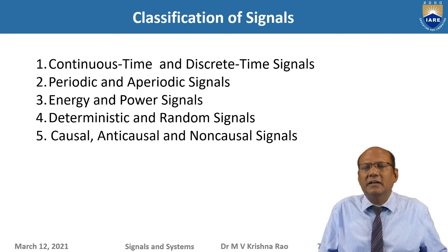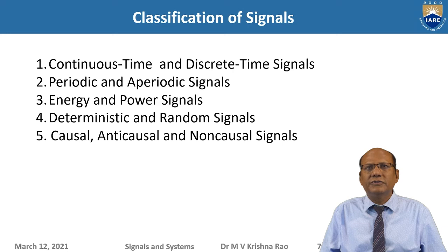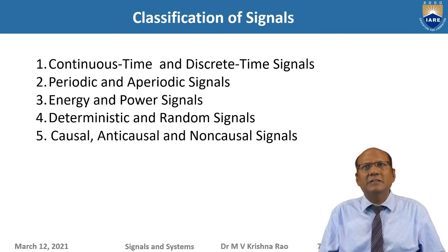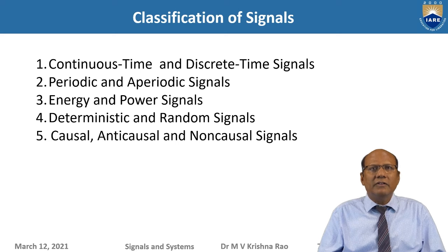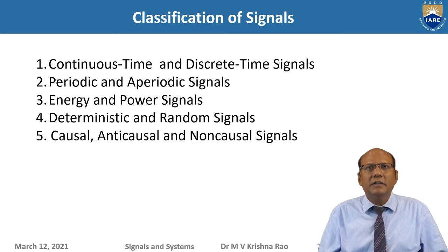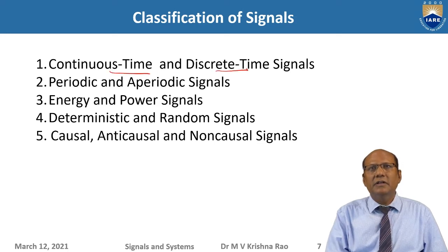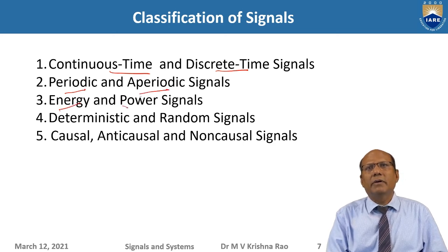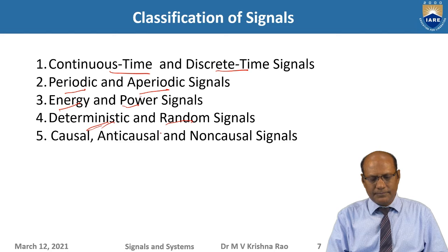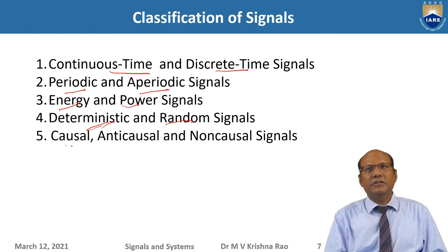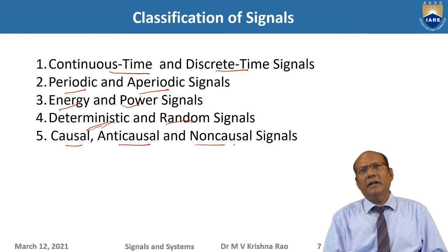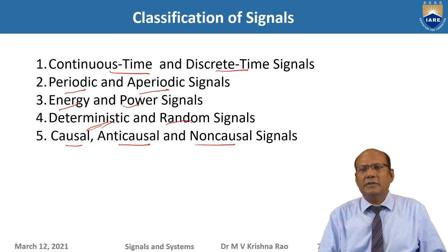Based on this, let us classify the signals. I have shown here five types of classifications. First is continuous time and discrete time. Second is periodic and aperiodic. Third is energy and power. Fourth is deterministic versus random signals. Fifth is causal signals, anti-causal signals, and non-causal signals. Let us see them one by one.